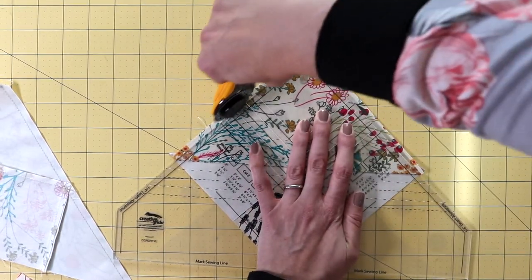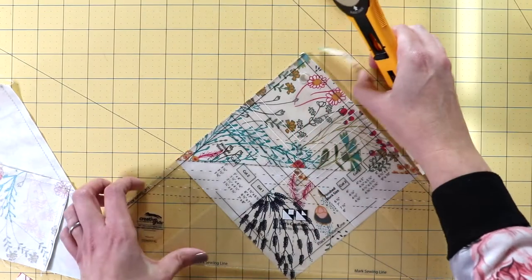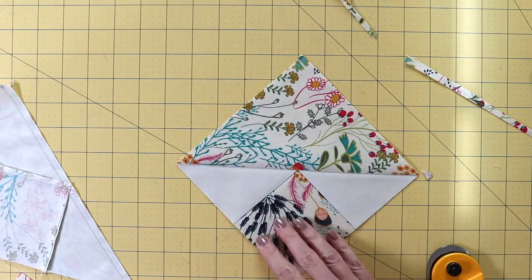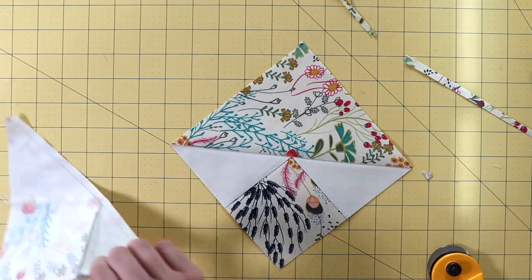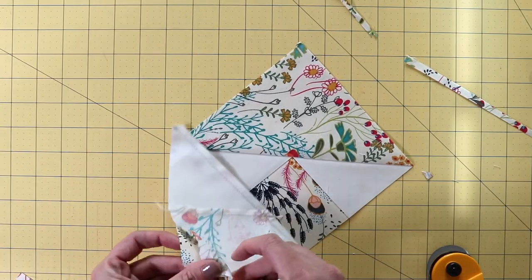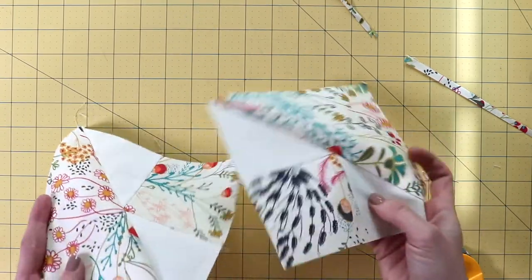Trim that up. And then you've got your first one. And then just repeat that with your second one. So then you instantly have two squares.